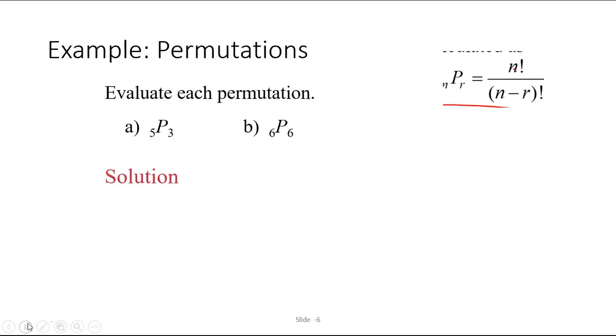So for example, if you're asked to evaluate each permutation and you're given 5P3, the number of ways of arranging five objects taken three at a time, you can do it using the formula. 5P3 is equal to 5 factorial over 5 minus 3 factorial, which is 5 factorial over 2 factorial. By the way, just to remind you, for factorial just counts all the way down to 1. You multiply all those factors together. And so if we divide that out, it's 5 times 4 times 3, which is 60.